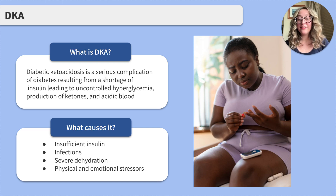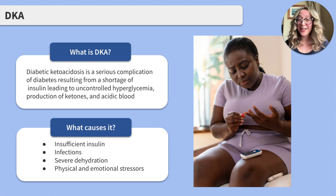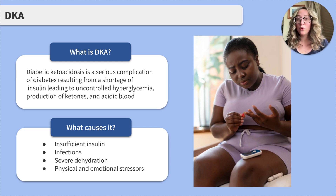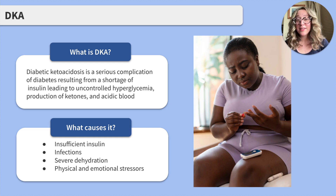Diabetic ketoacidosis is a serious complication of diabetes, typically type 1, but it can occur with type 2 in certain circumstances. DKA results from a shortage of insulin in the body, leading to uncontrolled high blood sugar levels and the breakdown of fat for energy. This leads to the production of ketones, which in high levels can cause the blood to become acidic.